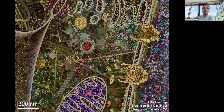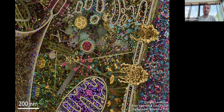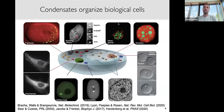Much of the biomaterials you see here need to be organized in space and also time. Much of this large-scale organization happens through membranes — like the plasma membrane, the mitochondria membrane, ER, and so on. But it's also clear that just the fact that these biomolecules interact leads to additional organization. And in the last 10 to 15 years, people identified many phase-separated condensates in these cells.